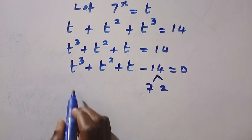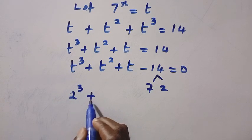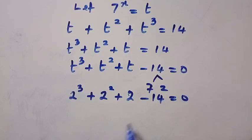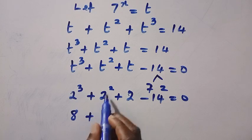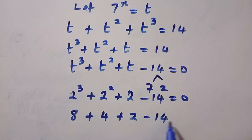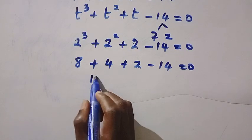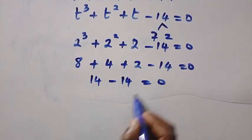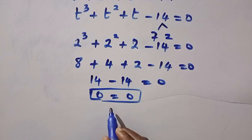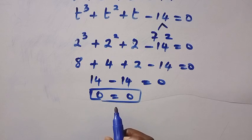Let's check for 2. Replacing this with 2, we are going to have 2^3 + 2^2 + 2 - 14 = 0. 2^3 means multiplying 2 three times: 2 × 2 × 2. We have 8 + 4 + 2 - 14 = 0. This gives us 14 - 14 = 0, which is 0 = 0. When the left-hand side equals the right-hand side like this, it means the value that we guessed, which is 2, is one of the solutions to t.